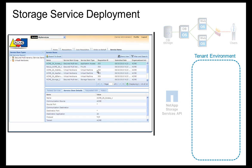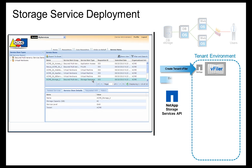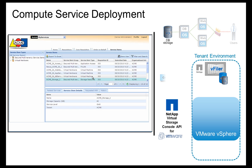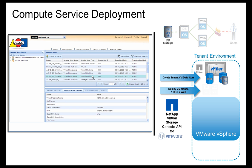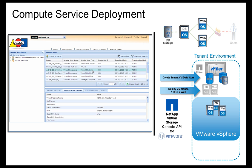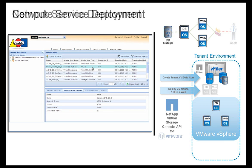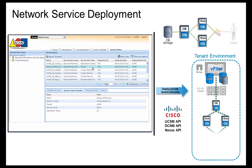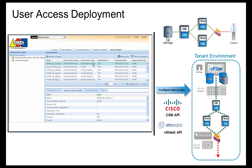Here, she sees the storage service, which was provisioned seamlessly through NetApp Storage Services Automation. And here, she sees the virtual machines that were provisioned through the NetApp Virtual Storage Console Automation for VMware vSphere. Over here, she sees the network services provisioned through Cisco Datacenter Network Manager and Nexus Automation. And lastly, she can see the user access configuration provisioned through vSphere vShield and Cisco Service Automation.